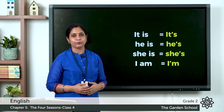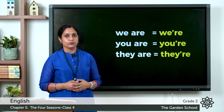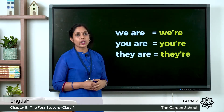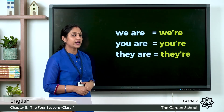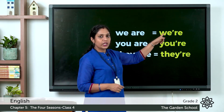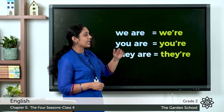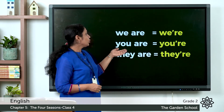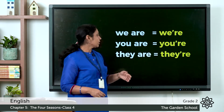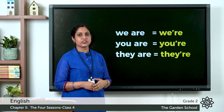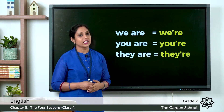I am is written as I'm — I apostrophe M. We are becomes we're — W-E apostrophe R-E, with the letter A missing. You are becomes you're, and they are becomes they're — T-H-E-Y apostrophe R-E.